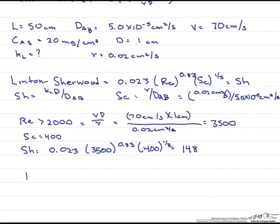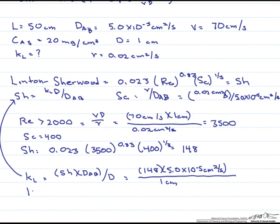Now let's calculate k sub l, which is equal to the Sherwood number times the diffusion coefficient divided by the diameter — rearranged from the Sherwood number definition. Our k sub l is going to equal 7.4 times 10 to the minus 3 centimeters per second.